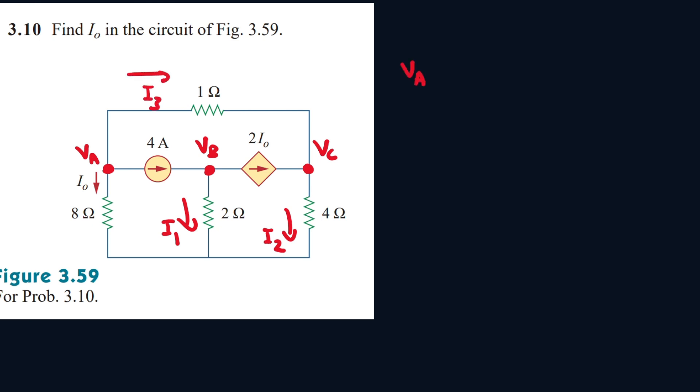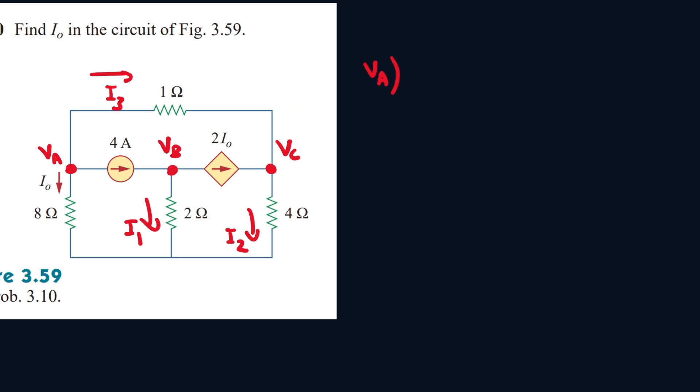Let's write down our equations. So the equation for VA, everything's leaving it, so it's IO plus 4 plus I3. For VB, 4 amps is entering it, and this is equal to I1 plus 2IO which is leaving it. VC, we see 2IO and I3 are entering it, and this will be equal to I2.